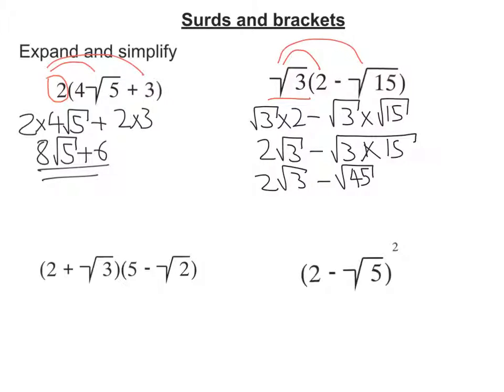Then we look to see if there's a square number that goes into it. Well, 9 goes into 45. 2 root 3 minus root 9 times root 5. So we're going to get 2 root 3 minus 3 root 5. And there's my answer.